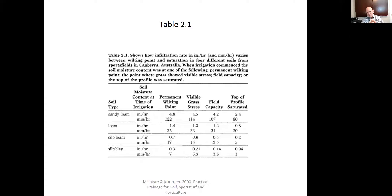Now let's look at different soil types and soil moisture content at the time of irrigation. We have four scenarios: permanent wilting point (really dry), the visible grass stress point, field capacity, and saturated at the top of the profile. In a sandy loam, when really dry it's taking in 4.8 inches per hour, and as it becomes saturated it goes down to 2.4 inches per hour. At the bottom of the table, a silt clay will only take 0.3 inches per hour even when extremely dry, and when saturated it's almost taking no water at all — 0.04 inches per hour. So soil texture can be a very important factor in infiltration rate.